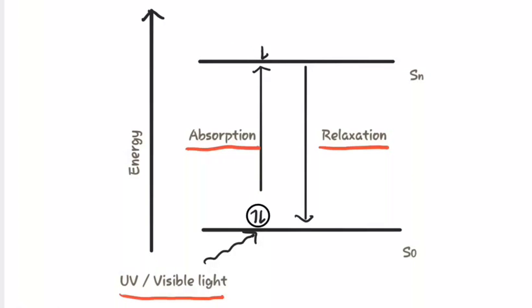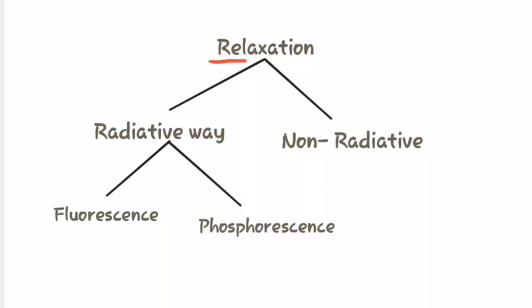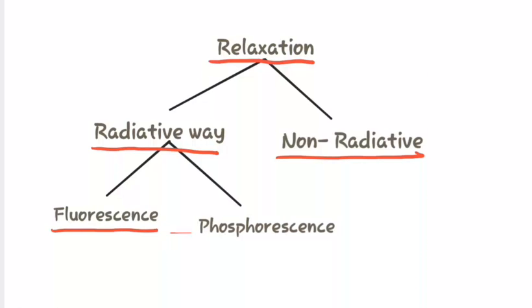As per the Perrin-Jablonski diagram illustration, there are multiple pathways by which the absorbed molecular energy can be released. Relaxation can occur in many ways — mainly in two ways: the radiative way and the non-radiative way. In the radiative way, it occurs by two mechanisms: first is fluorescence, and second is phosphorescence.